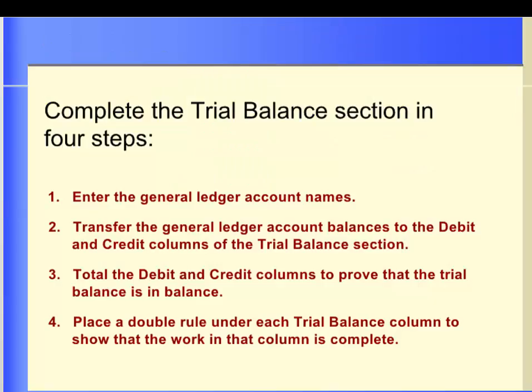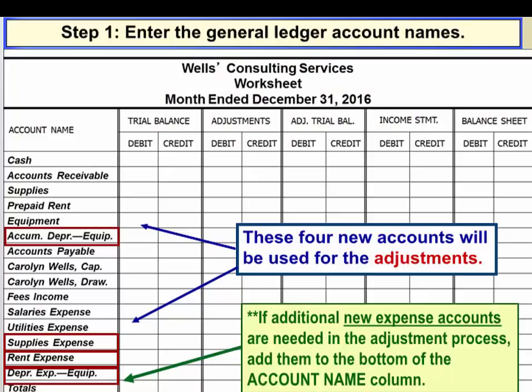The first column of a worksheet is the account name column. The worksheet has five sections, and each section has a debit and credit column, so this can also be called a 10-column worksheet.